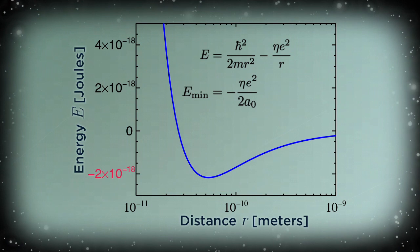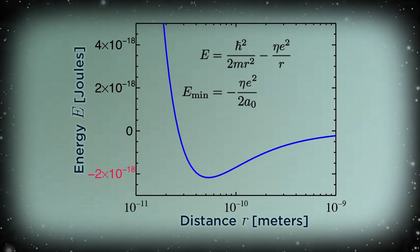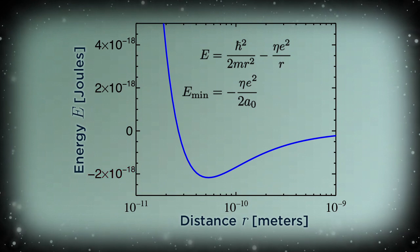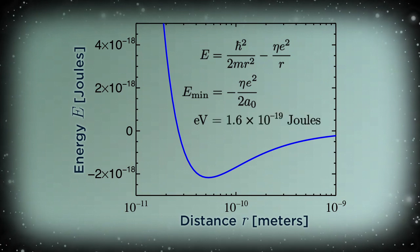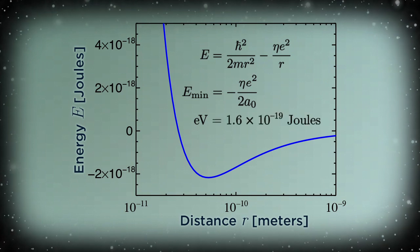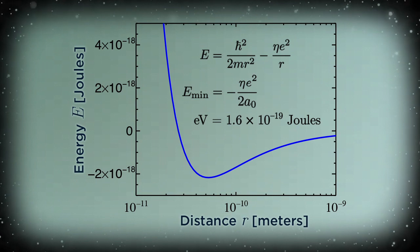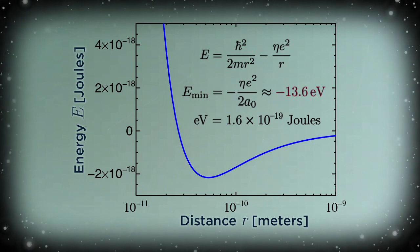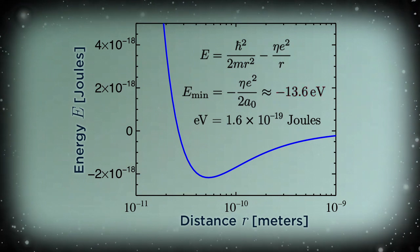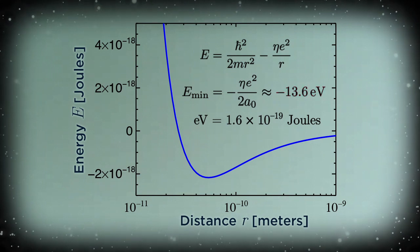That energy scale, too, is central to atomic physics, so it's useful to express it in different units: electron volts, or eV. One eV is defined as 1.6 times 10 to the minus 19 joules. That way, the minimum energy comes out to be minus 13.6 eV, which is indeed the measured binding energy of an electron in a hydrogen atom.